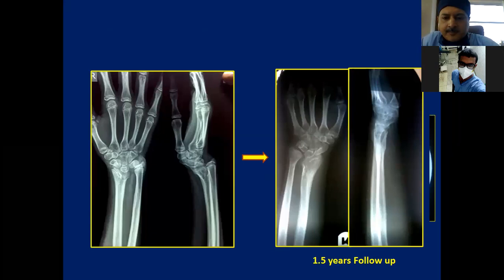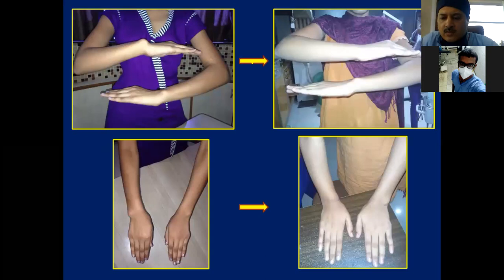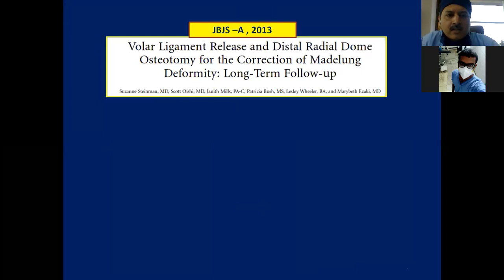After the radial osteotomy correction and ulnar epiphysiodesis, there is some positive ulnar variance, but the patient was happy with the clinical correction — the dorsal bump resolved and range of motion normalized.